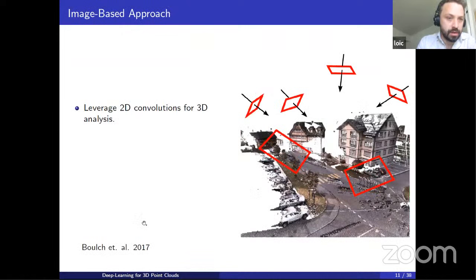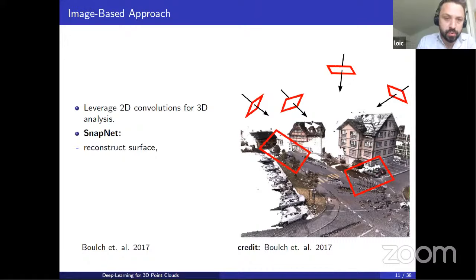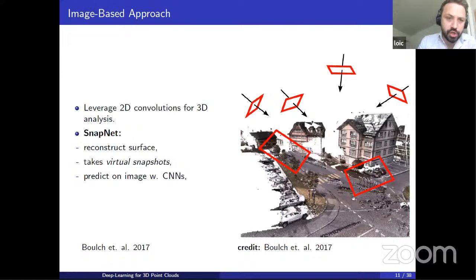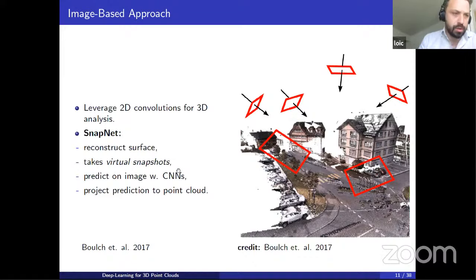The most obvious approach — and actually the first that really worked somewhat at scale — came from the observation that convolutional neural networks are great at analyzing images. We can leverage this by simply taking pictures of our 3D scene: first we do a surface reconstruction, then take virtual snapshots at chosen camera positions and parameters, feed them to a CNN trained to do pixel prediction, and project back to the 3D point cloud. This works well but is a little complicated, and by taking images of a 3D scene you lose a bit of structure. It was the first approach to really show that deep learning can be applied to 3D point clouds.